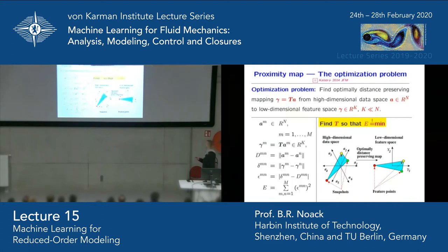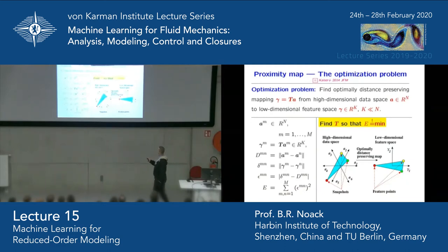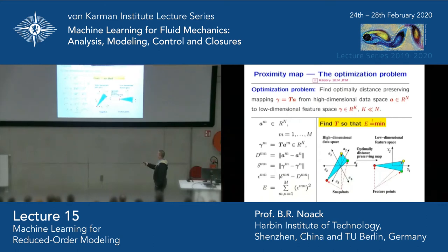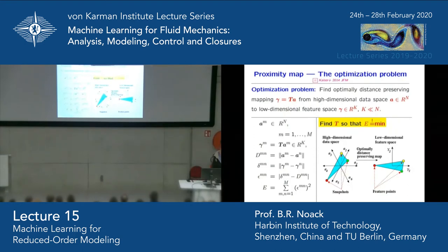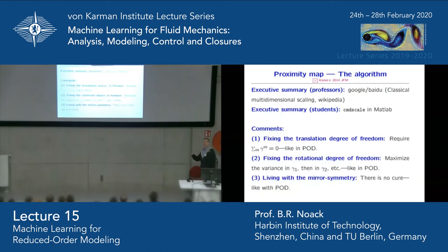Here's the mathematics behind it. The optimization is: try to find a mapping from the high-dimensional space to the low-dimensional space such that the average error on the distances is minimized. These are the snapshots in the high-dimensional space and these are the feature vectors in the low-dimensional space. This is the distance between the m-th and n-th snapshots, and the same for the feature vectors. You want these two differences to be small — the cumulative error minimized. Find the T such that E is minimal. It turns out that if you don't add further constraints, gamma_1 and gamma_2 are the first two POD modes. Typically you would add more constraints and link your feature space also to your performance.